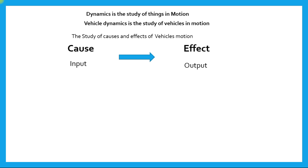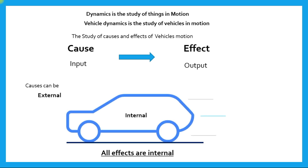These causes and effects can be of a wide variety. The inputs can be either external or internal. An external input would be something like wind acting on the windshield of the car, imposing a force on it, or a bump on the road — that is an external input. An internal input would be something like input from the driver, such as a steering input. All of these inputs will cause an output — a response — and all of these effects or responses will be internal to the vehicle.